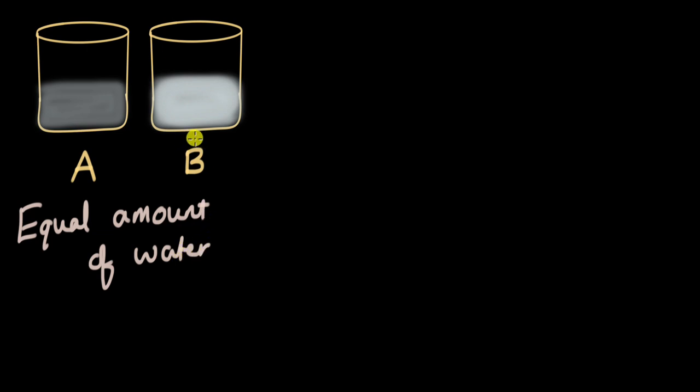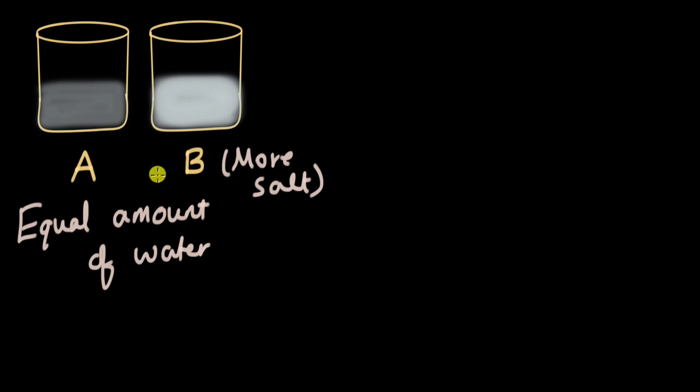I have these two salt water solutions. The solution in beaker B has more salt dissolved in it. There is an equal amount of water in beaker A and B, and there is more salt in beaker B. You can see that in the way I have shaded it — it's more cloudy — and this one is less cloudy. There's more salt dissolved in beaker B compared to A. We can say that the solute is more in the second beaker compared to the first one, even though the amount of solvent is the same.